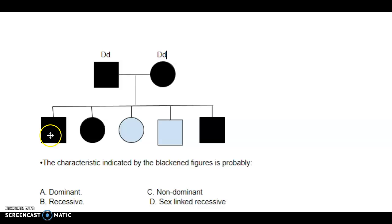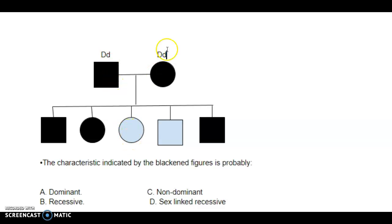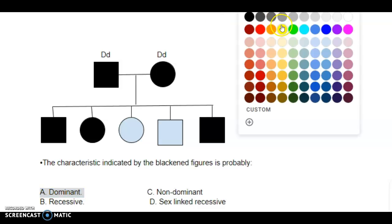Either parent could give a big D to the affected children, giving them the trait. For the two children who do not have the trait, both parents being heterozygous would still work — dad could give a little d and mom could give a little d to this daughter, and dad could give a little d and mom a little d to this son, and neither would have the trait. So it works out — the correct answer is dominant, with both parents being heterozygous.